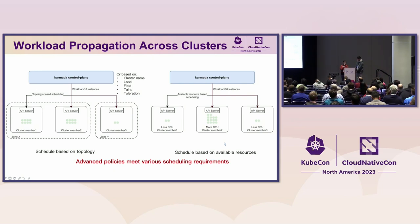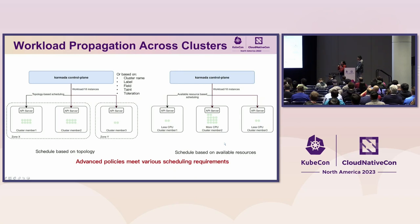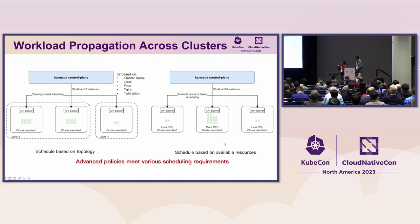On the right, it shows the workload is scheduled to cluster member 2 in the middle because it has more CPU. For example, in AWS we have reserved instances and we want to make full usage of those instances, so we schedule more workload there. For clusters with less CPU available, like cluster member 1 and cluster member 3, we just schedule less workload. It's more cost efficient.